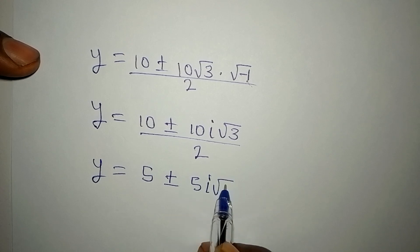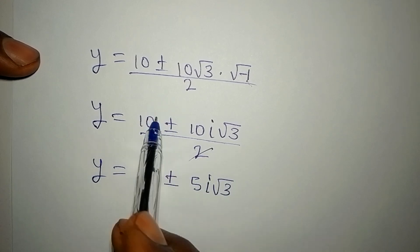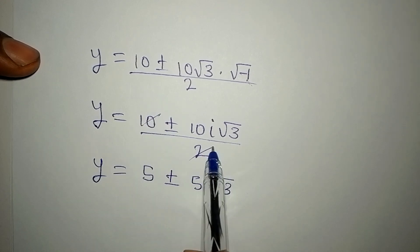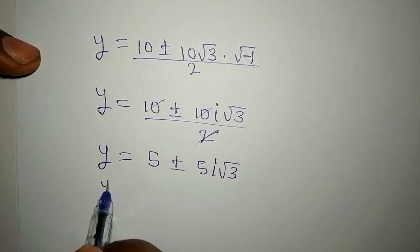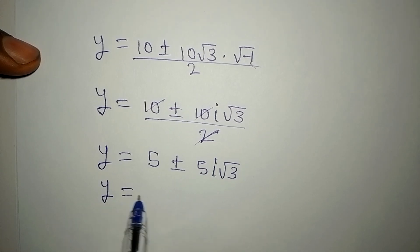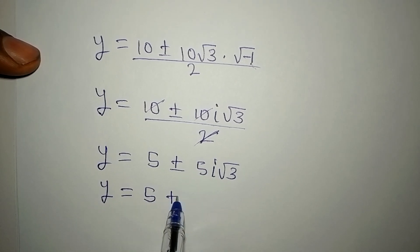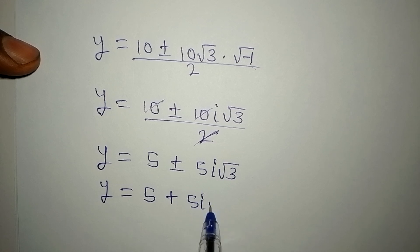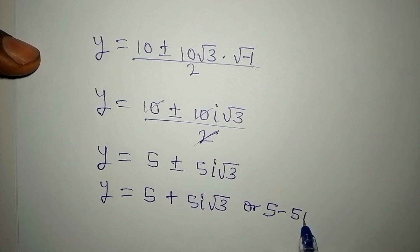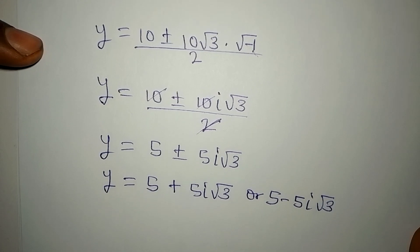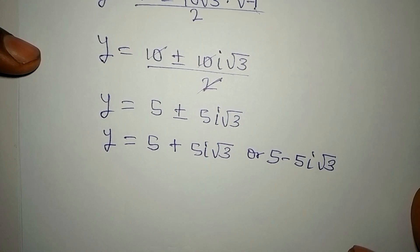Dividing through by 2, y equals 5 plus or minus 5i√3. So y equals 5 plus 5i√3, or y equals 5 minus 5i√3.